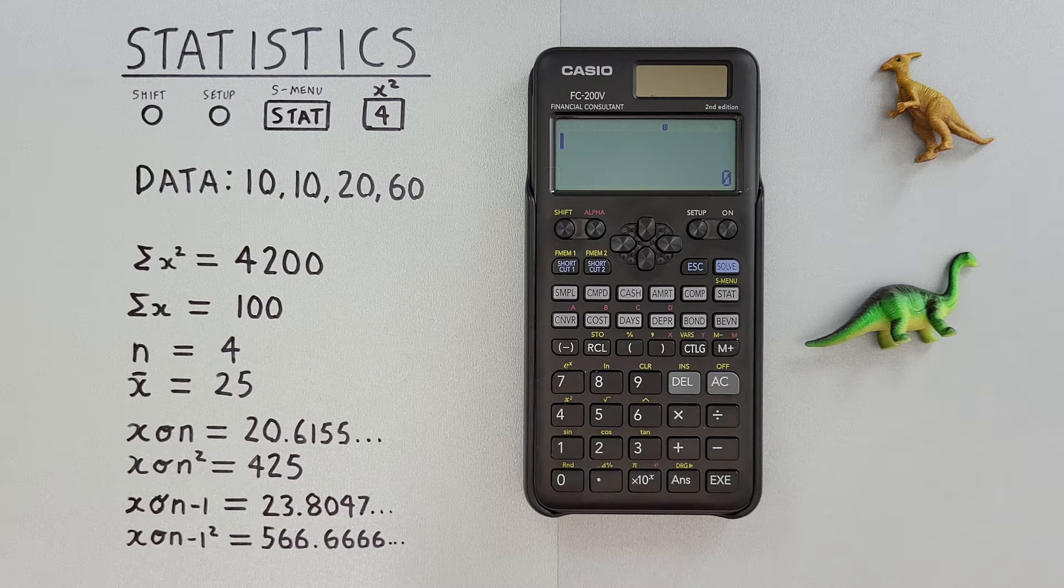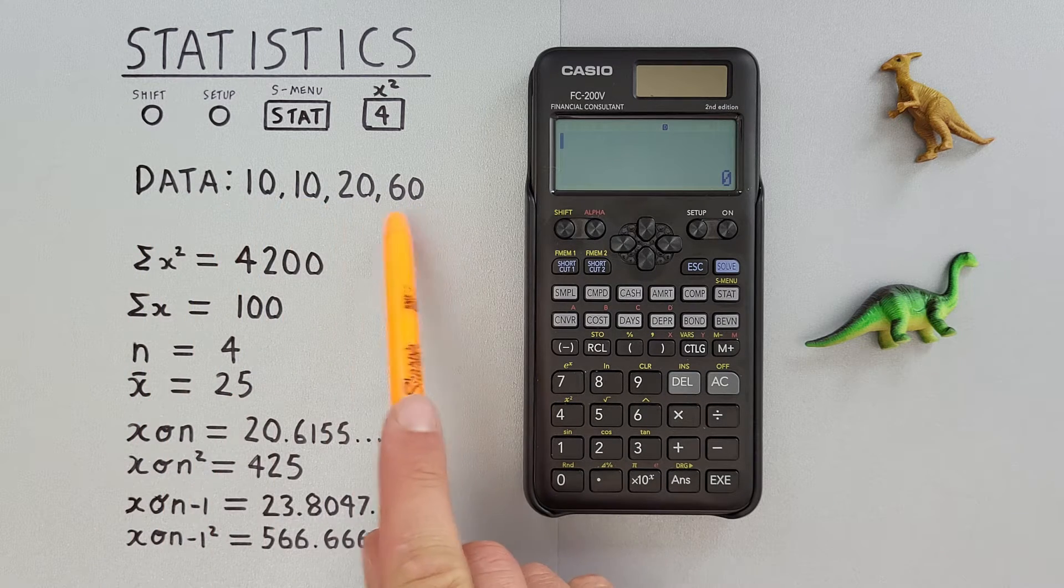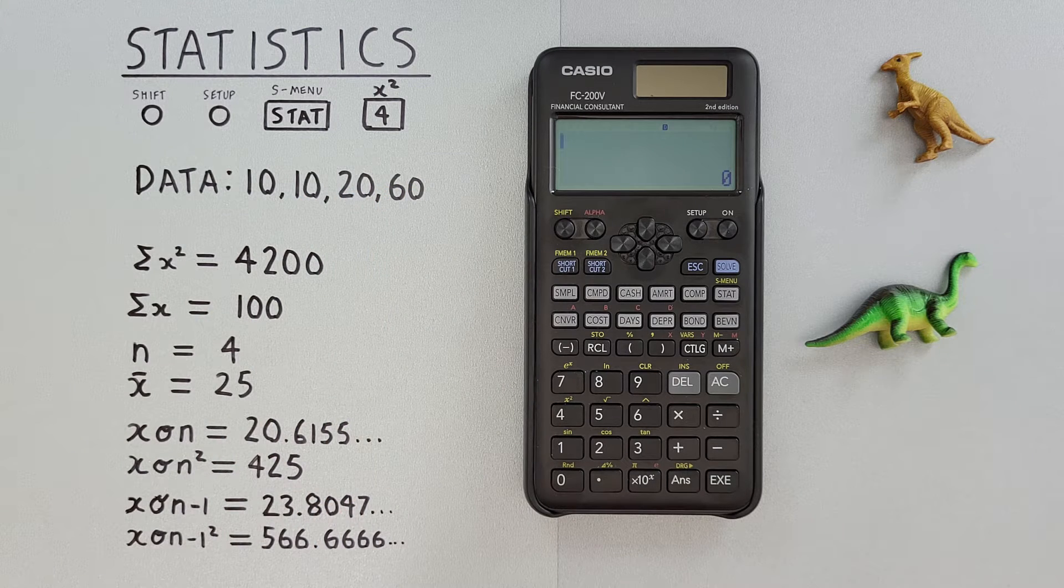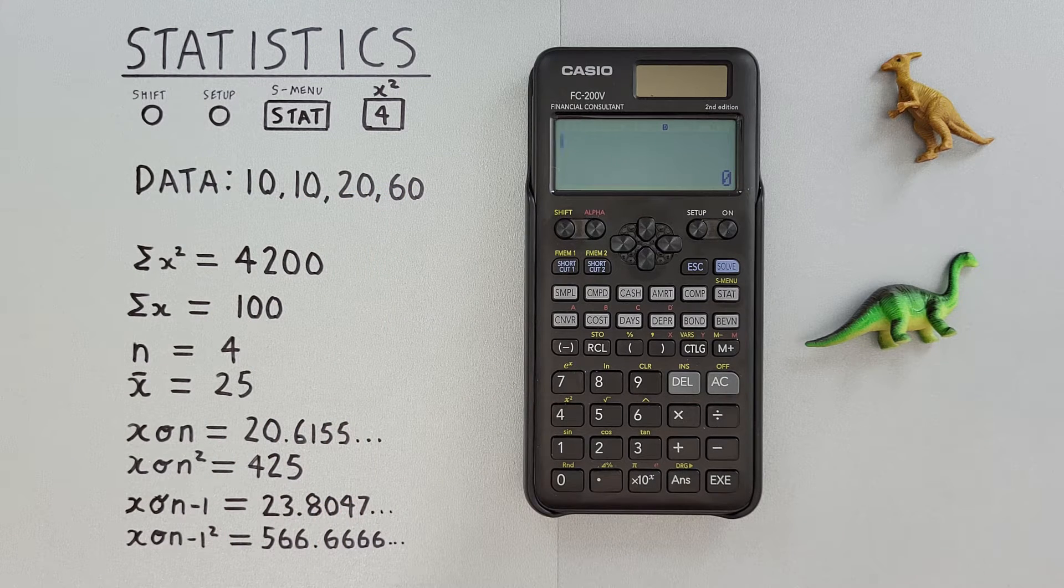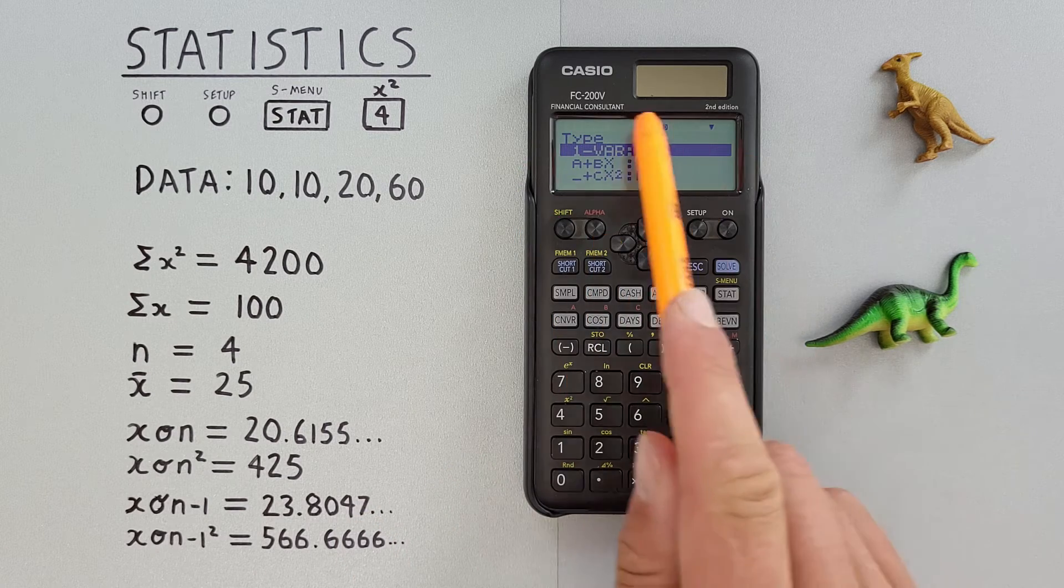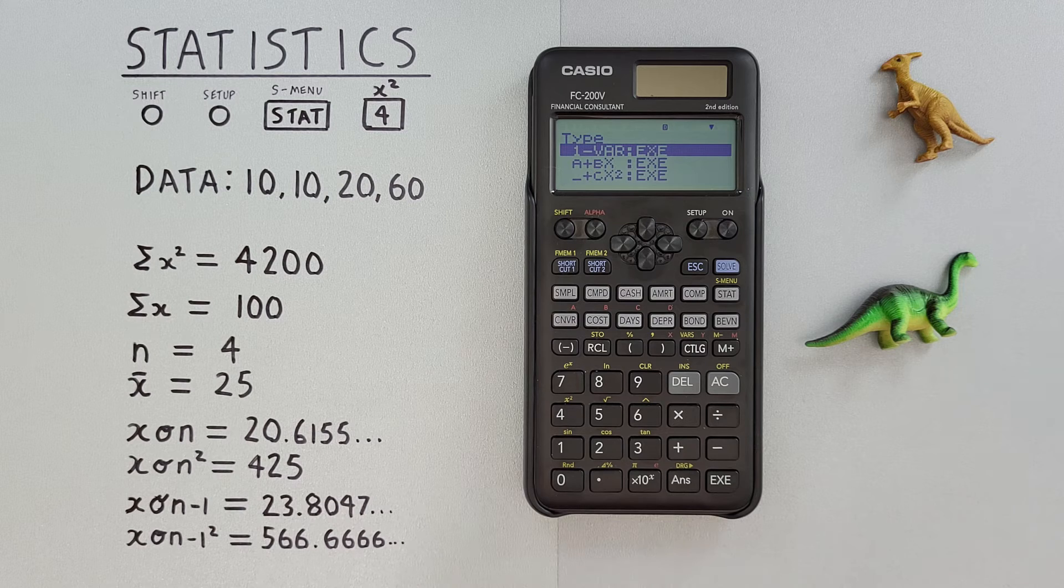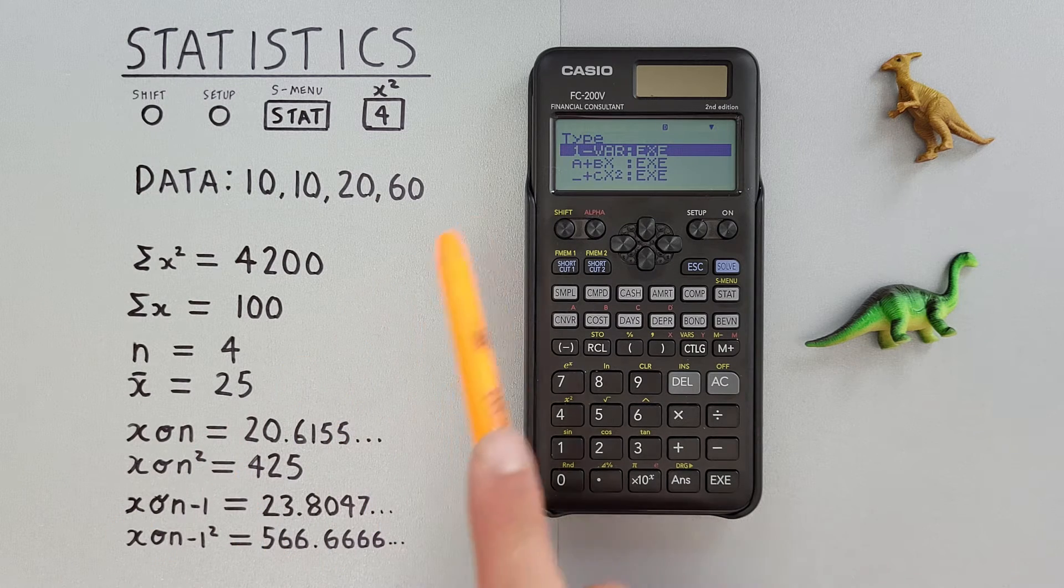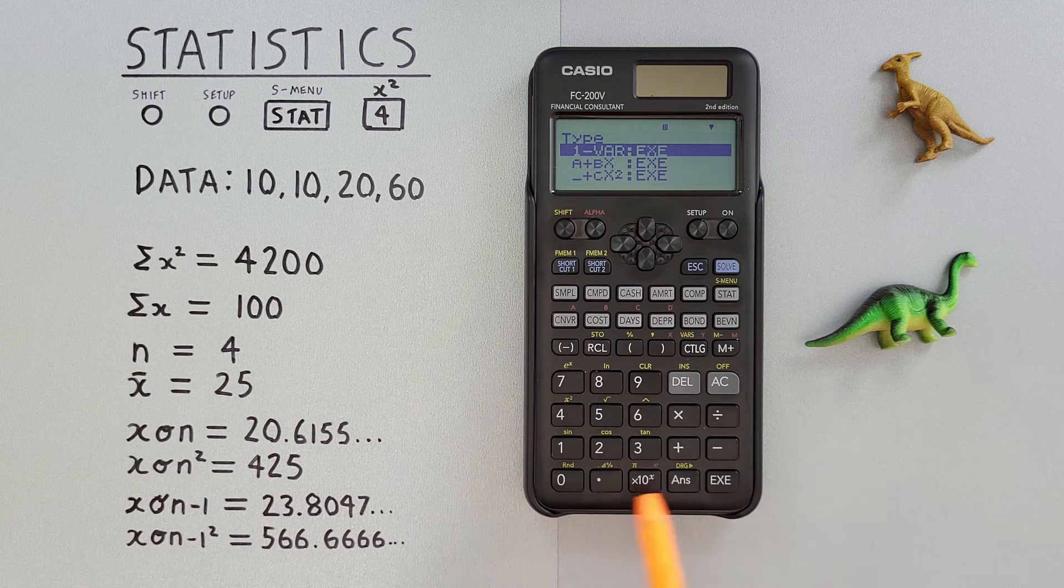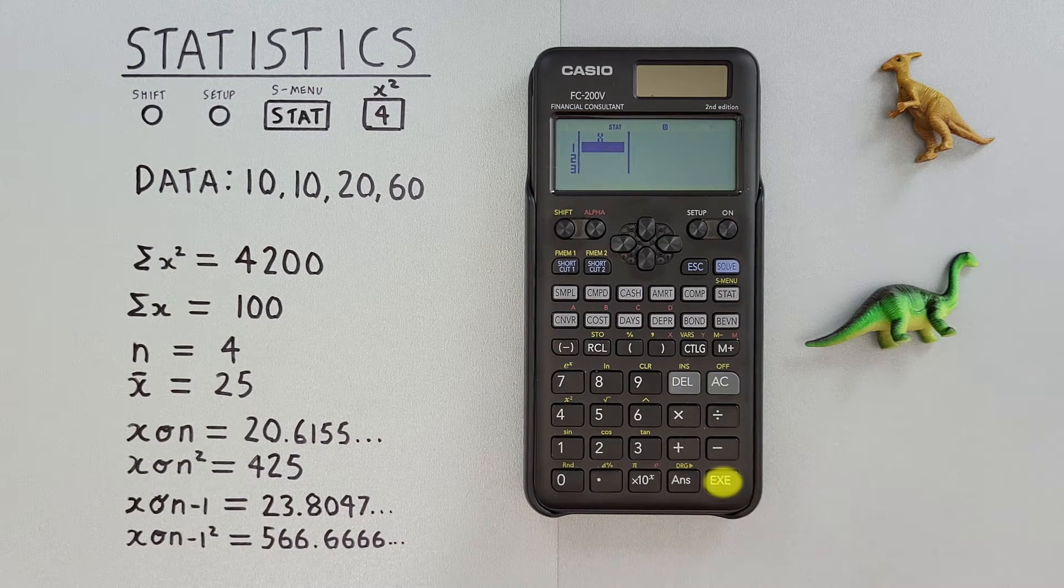For this example, we'll be using this dataset: 10, 10, 20, and 60. To get started, we need to press the stat key here. That'll bring us to this menu, where we choose which type of stat we want to find. We want to choose the first one, one variable stats, so we'll hit exe to select that.